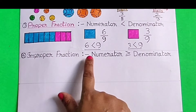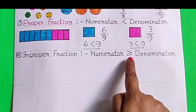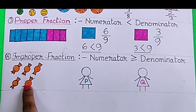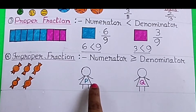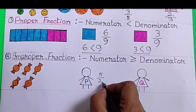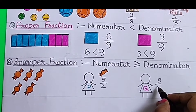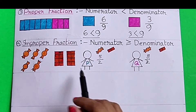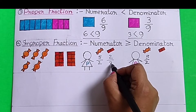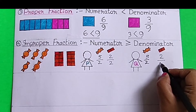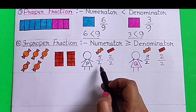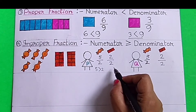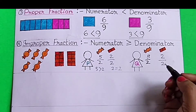Improper Fraction: When the numerator of a fraction is greater than or equal to the denominator of the fraction, that kind of fractions are called improper fractions. For example, there are 5 candies. We have to divide them between 2 persons, P and Q. So each person will get 5 by 2 portion of candies. Another example: there are 2 chocolate bars, so each person will get 2 by 2 portion of chocolate bar. Here the numerator is greater than the denominator, and here the numerator and the denominator of the fraction are equal. This kind of fractions are called improper fractions.